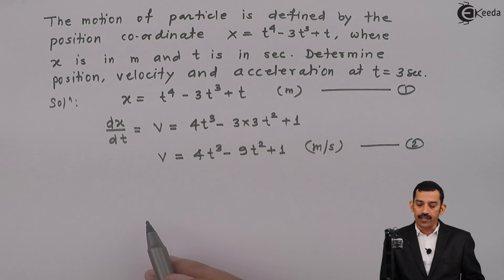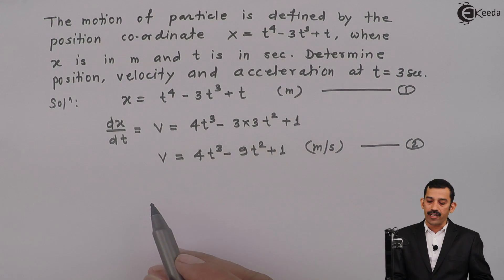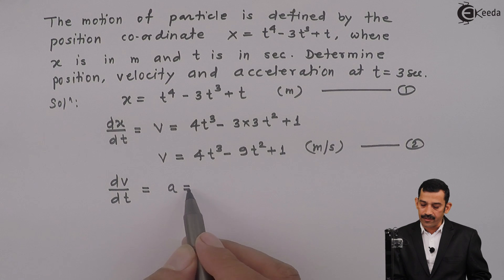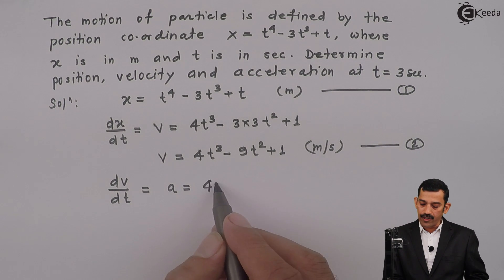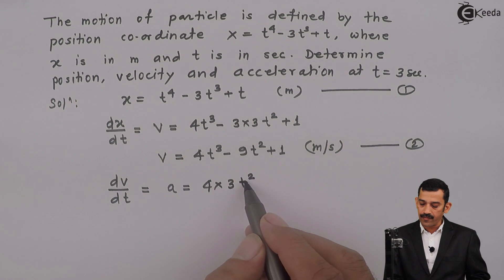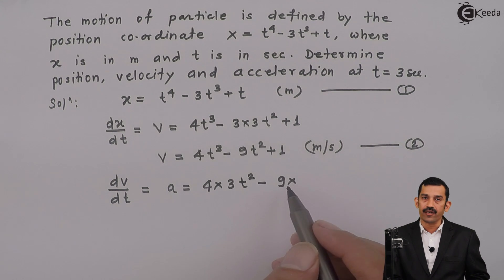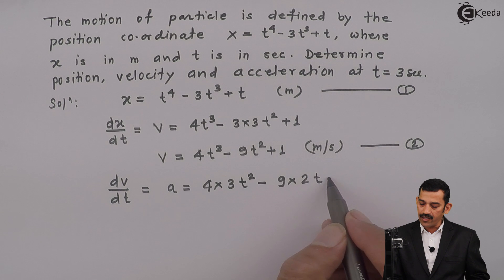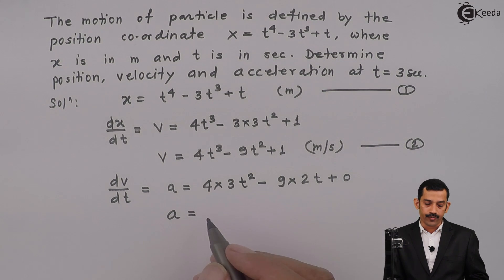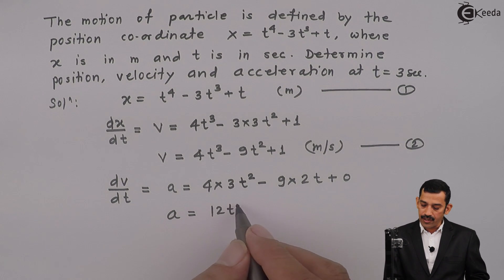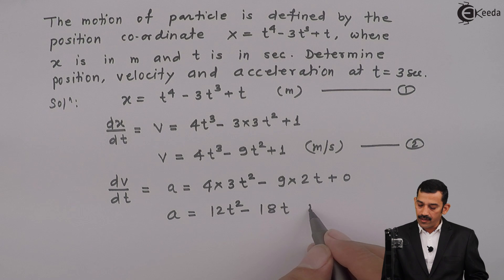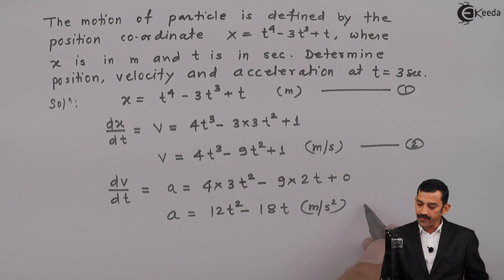Now, if we differentiate velocity with respect to time t — that means dv/dt, which equals acceleration. Differentiating: 4 times the differentiation of t³ is 3t², giving 12t²; minus 9 times the differentiation of t² is 2t, giving 18t; and the constant becomes 0. So acceleration equals 12t² minus 18t, in meters per second squared. This is equation number 3.